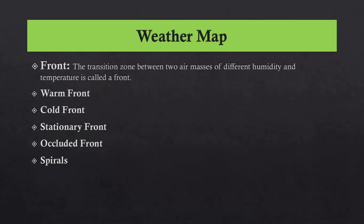What is the stationary front? This is basically the front where air does not move at all — neither mass displaces the other. It is shown with both red and blue dots on the weather map. What is the occluded front? The occluded front has both warm and cold occlusions. It is basically the overtaking of a cold front on a warm front.